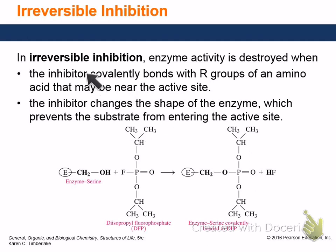Irreversible inhibitors can actually modify R-groups of amino acids, change the shape of the enzyme, and prevent the substrate from getting to the active site. For example, aspirin works by affecting cyclooxygenase — it modifies the serine residue, specifically bonding to the OH group on the serine in the active site, and prevents further catalysis of the substrate molecule, which is arachidonic acid.